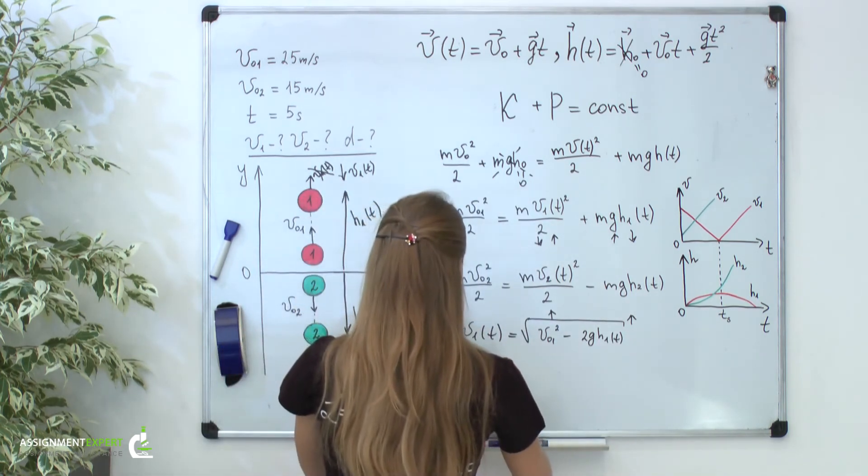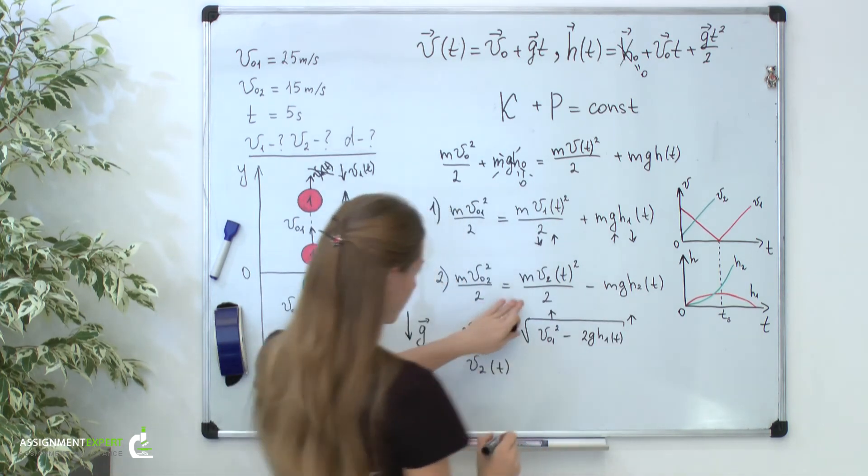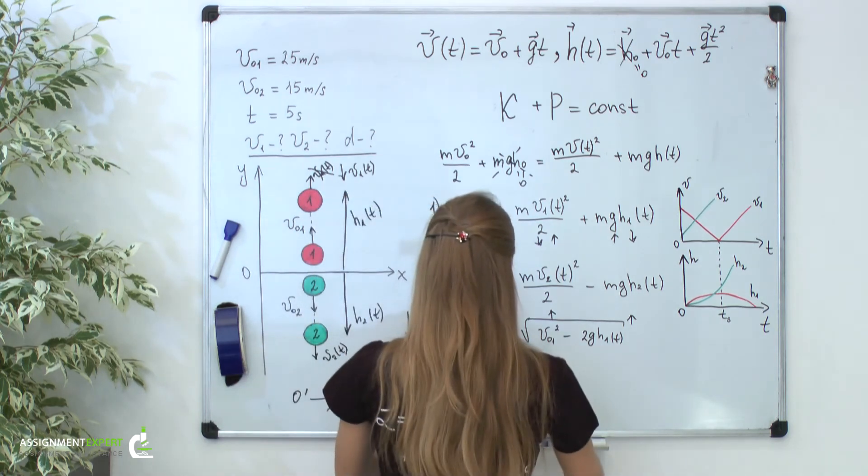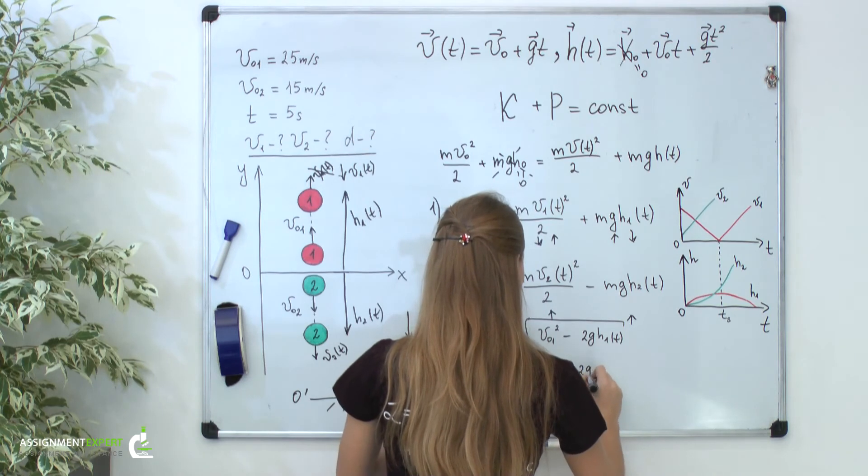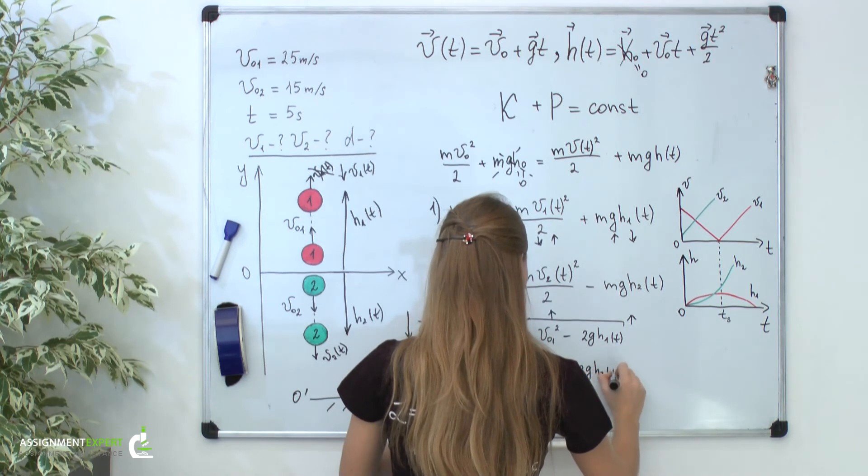The second velocity from this equation is equal to the square root of V02 squared plus 2GH2 of t.